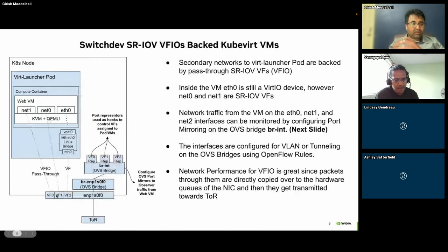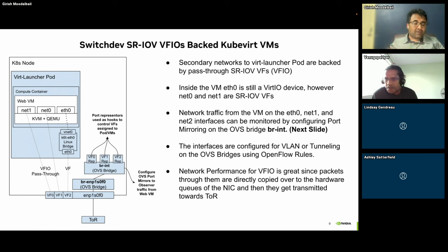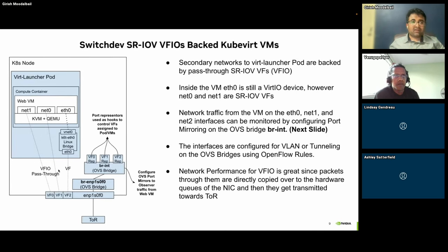Now let's look at switchdev mode. In switchdev, every VF carved out of a PF has two associated things: the VF itself, and a netdev device on the host called a VF representer (or port representer). This port representer is like a shadow device — you control everything through this native device on the host. TC rules added to this native device end up on the e-switch hardware of the NIC, so everything coming through that VF gets offloaded on the NIC: firewall rules, load balancing, DNAT, SNAT, forwarding — all offloaded thanks to the representer devices.